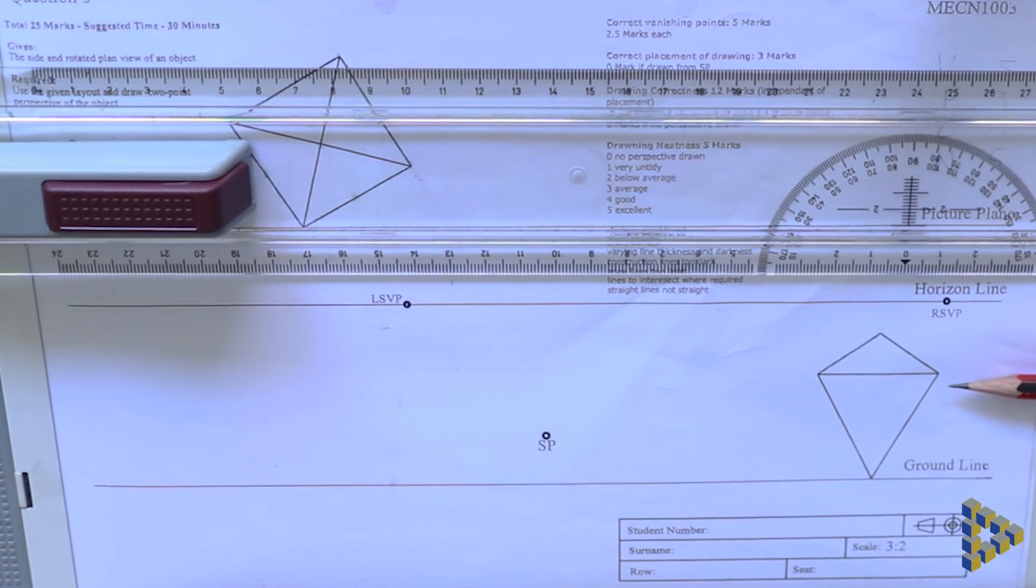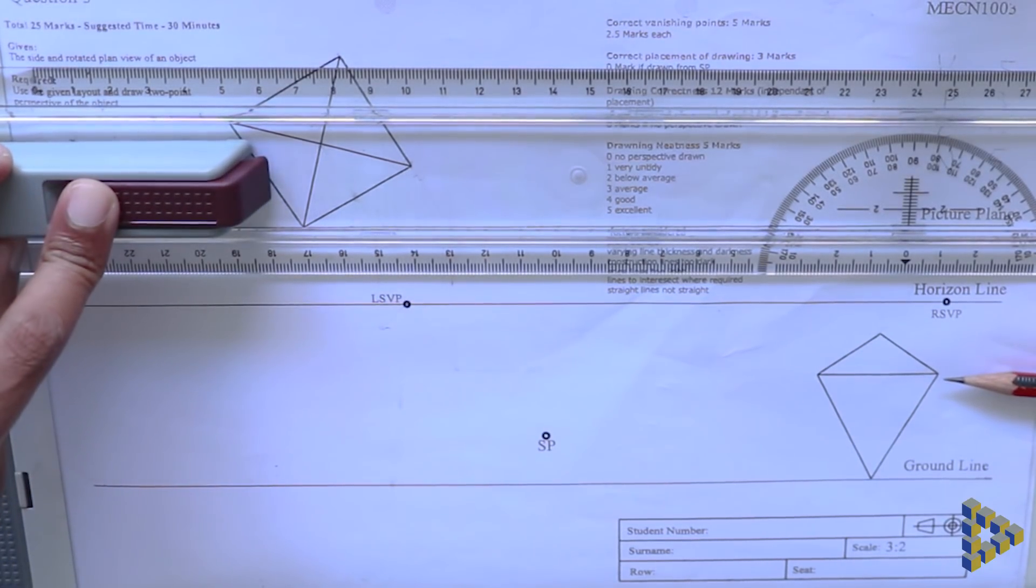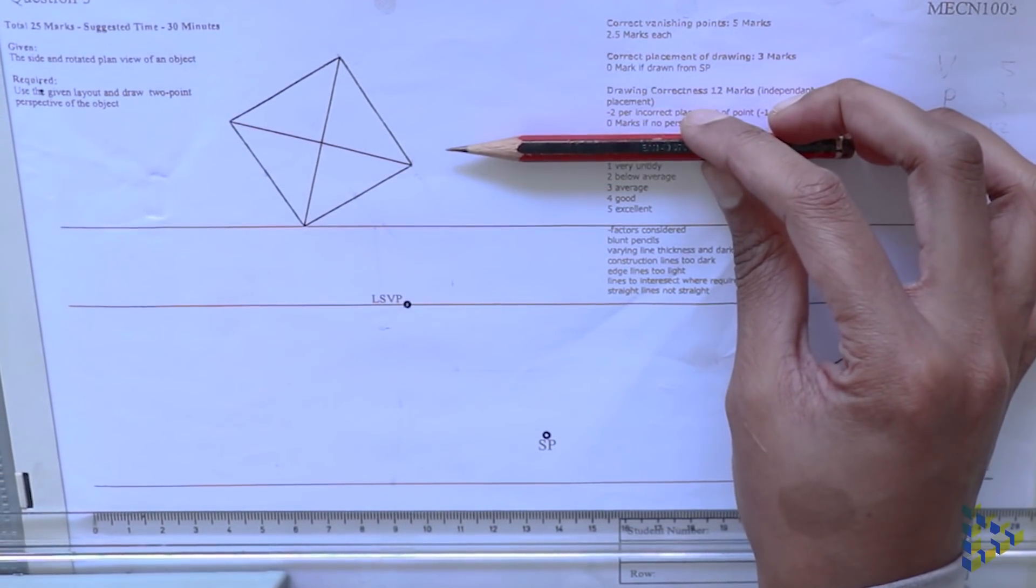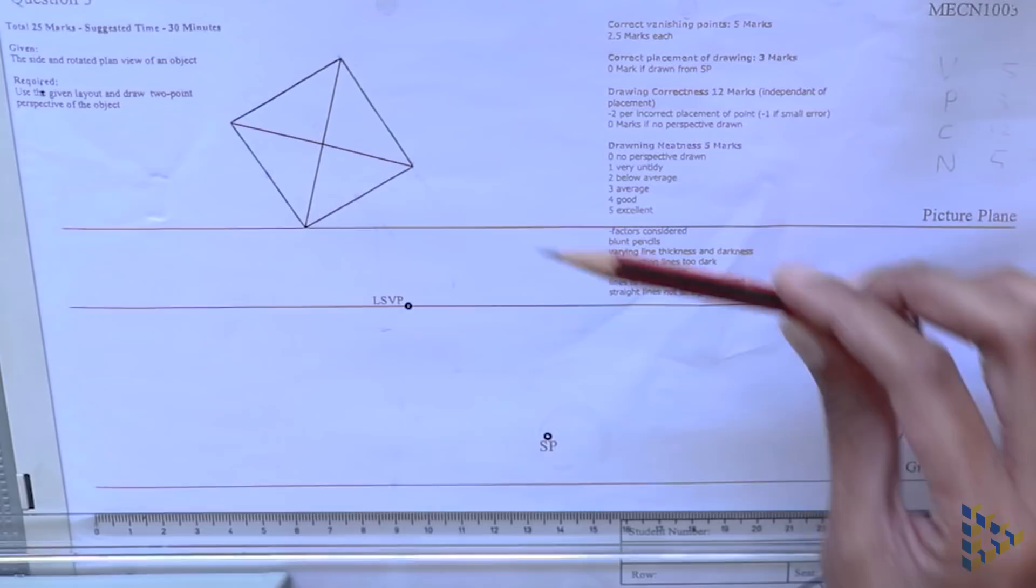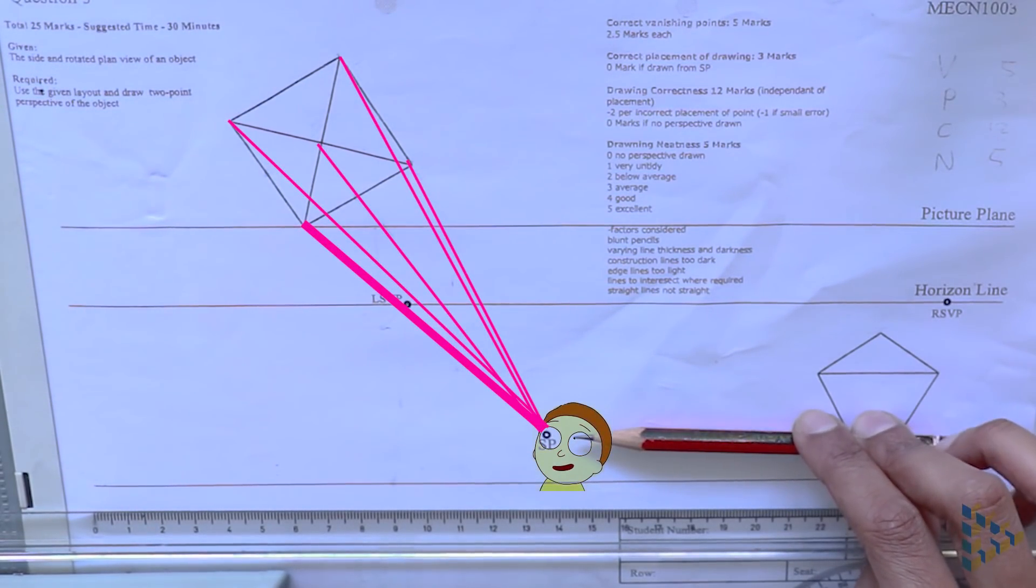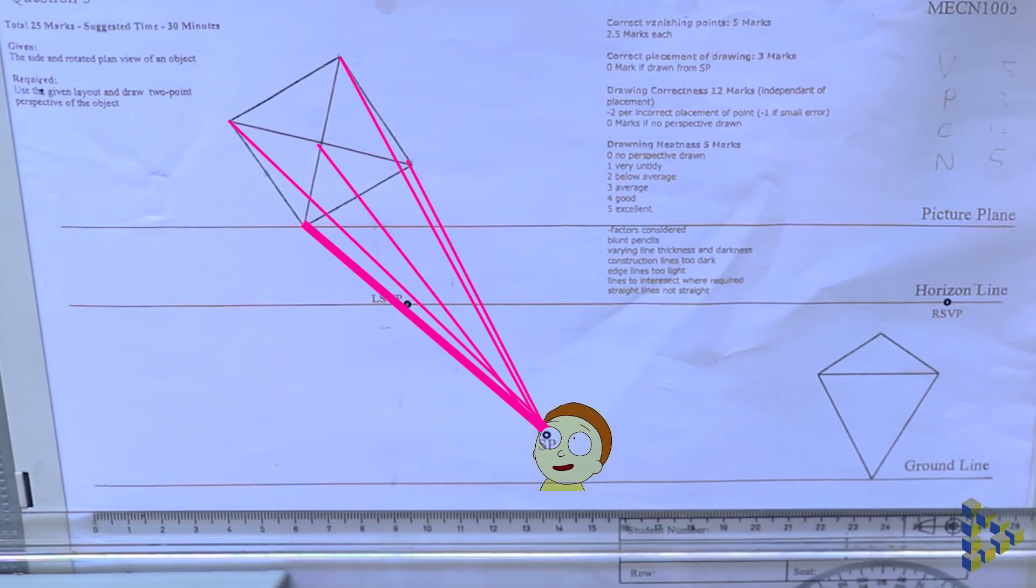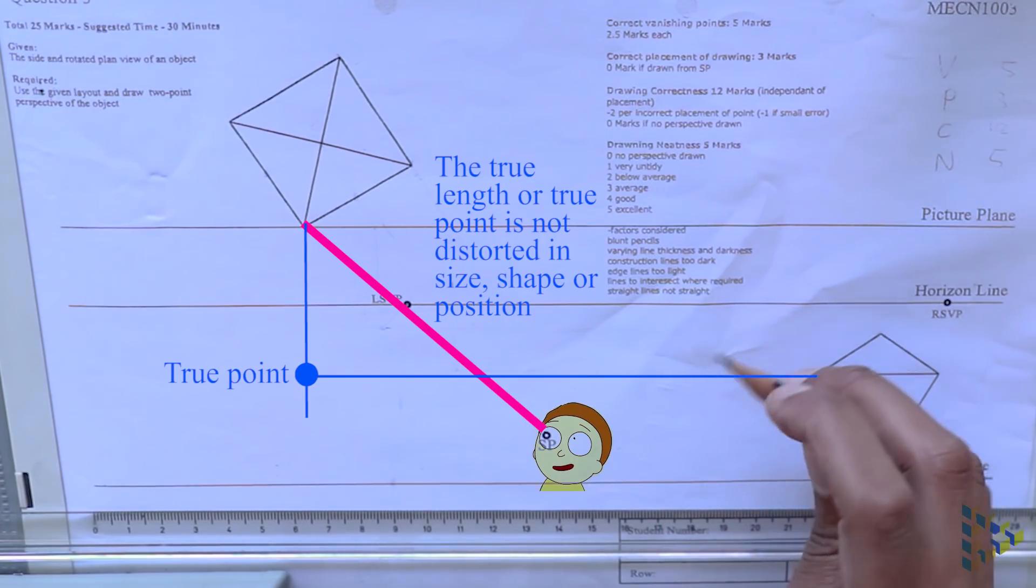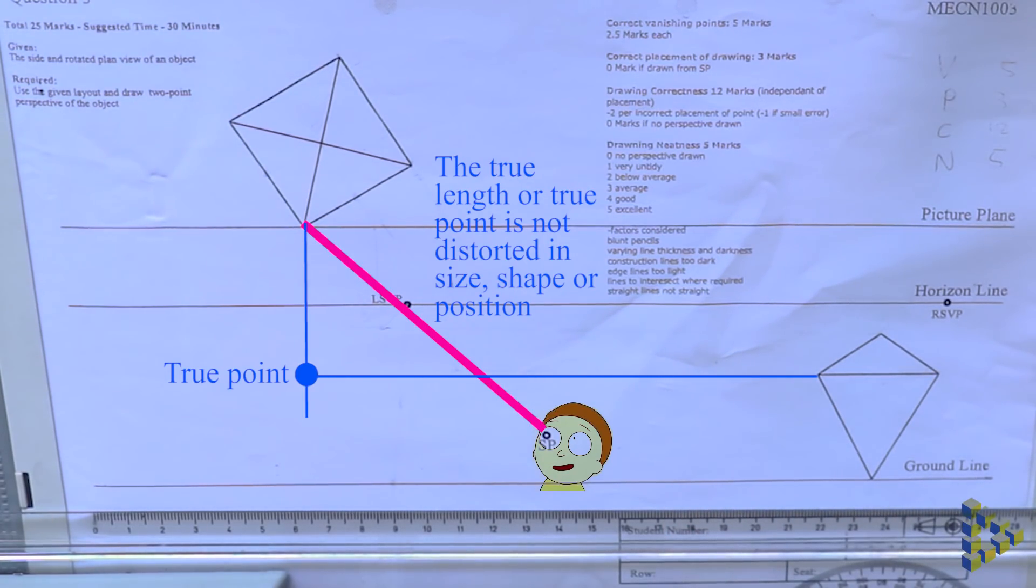In this example we don't have a true length line as the point touching the picture plane refers to a line on the side view that is not perpendicular to the ground. This means that every line or point on this drawing will be distorted in size, shape and position except for the true point.